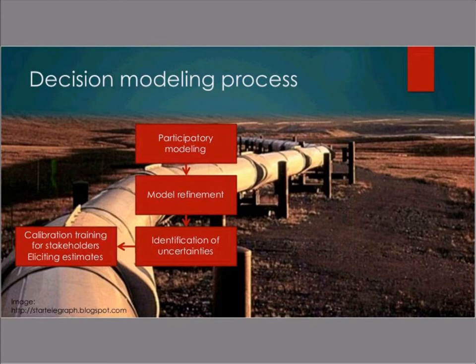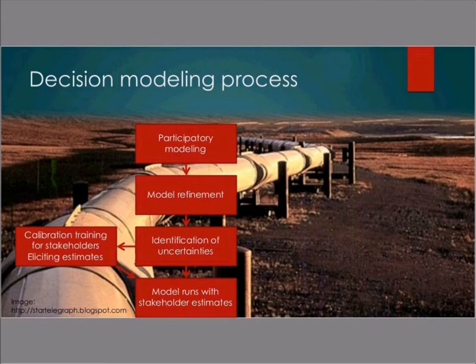We trained them to estimate variables where they were uncertain. Instead of asking for an average value, we asked them to estimate the range — the 90% interval where they feel comfortable that the true value would lie in between. Then we ran the models with the stakeholder estimates, doing a Monte Carlo permutation analysis, repeating the model 10,000 times and drawing different parameter values at random every time we ran the model.